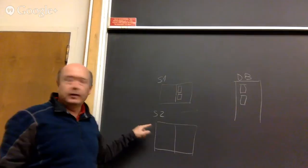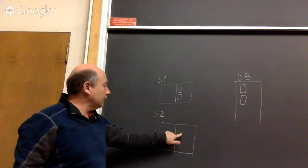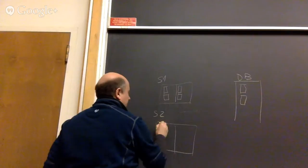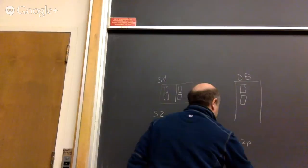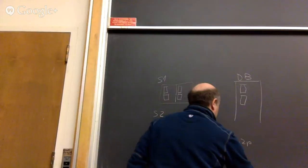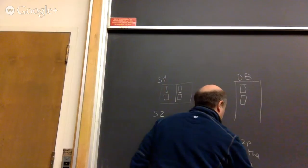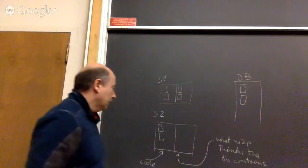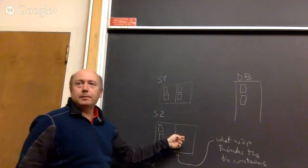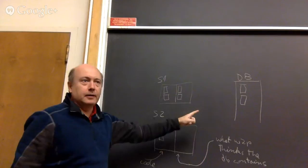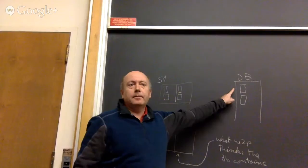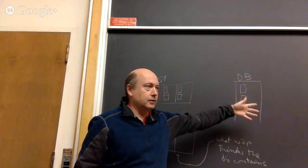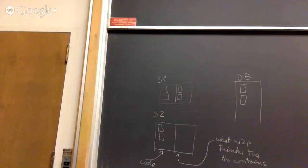When the second student tried to use the code, Web2Py thought the two tables didn't exist in the database and tried to create them. The database responded with an error saying the tables already exist, and the application crashed. Essentially, the code is versioned but what Web2Py thinks the database contains is not. That's the core problem.